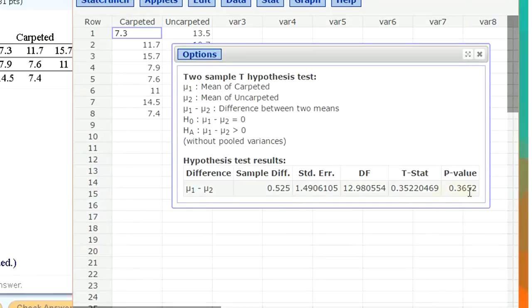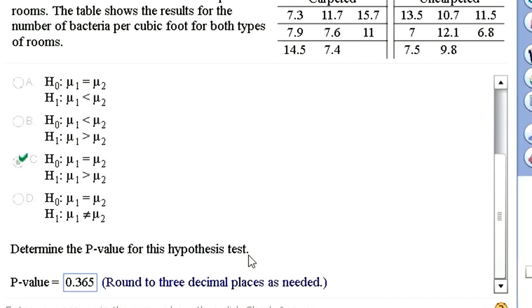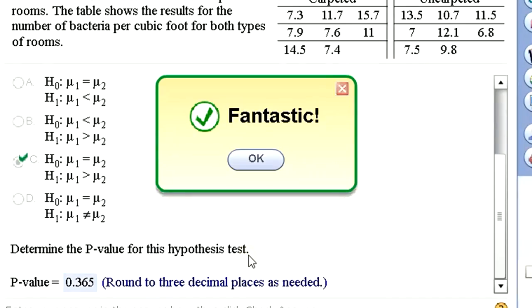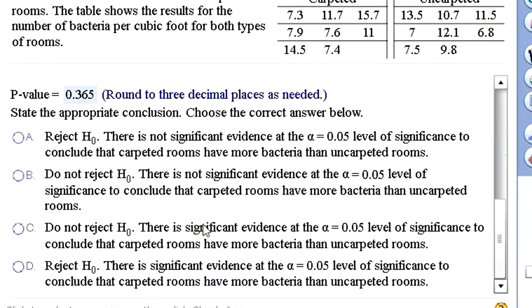P value is pretty high, 0.365. It's certainly higher than my alpha level. A high p value leads you to not reject the null hypothesis. So we do not reject the null. There is not sufficient evidence at the alpha of 0.05 to conclude that carpeted rooms have more bacteria. That's it.